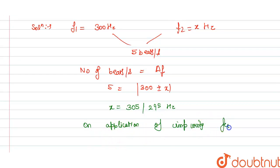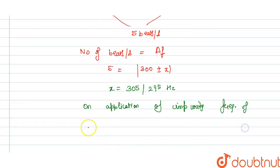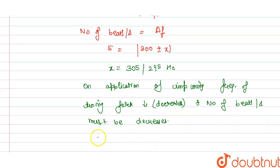The frequency of the tuning fork decreases when impurity is added, so the number of beats per second produced must be decreased. Therefore Δf must be decreased